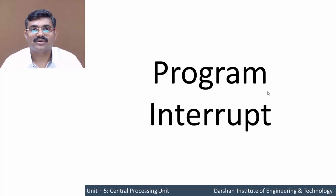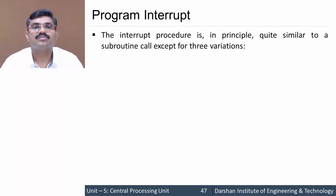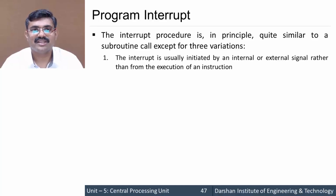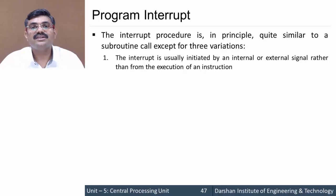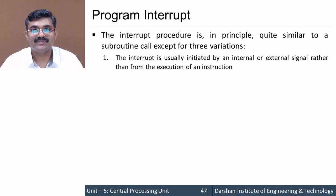In this session we'll discuss program interrupts. Interrupts are exactly similar to branch-and-save-return-address instructions, meaning they are similar to subroutine calls, but with certain differences. The first difference is that an interrupt is usually initiated by means of an internal or external signal — we do not write instructions for this in the program; they are generally initiated by some external signals.